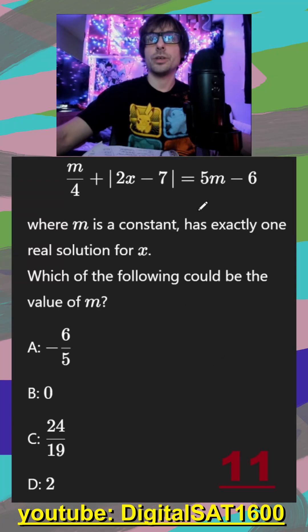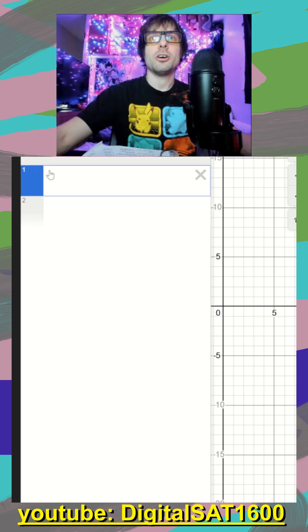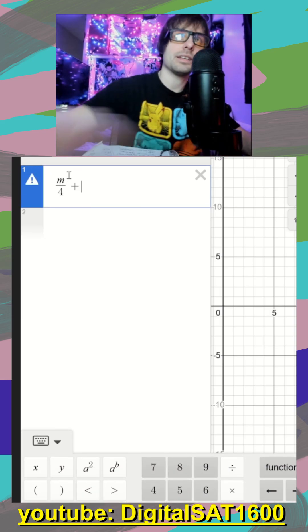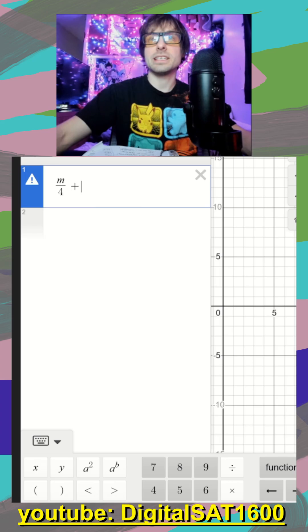I see a function with an absolute value in it. So I'm automatically jumping to Desmos. On Desmos, I'm going to type my function in.